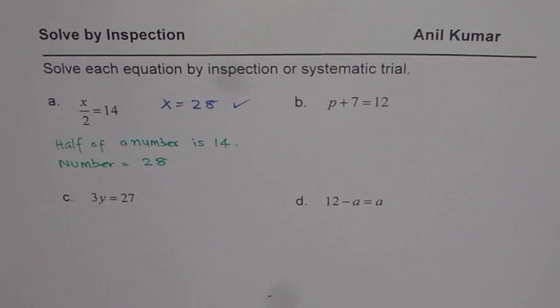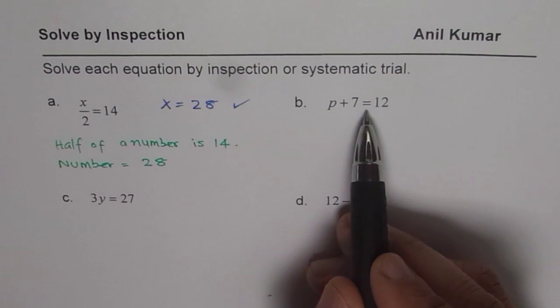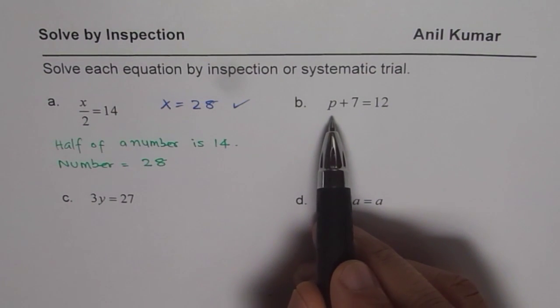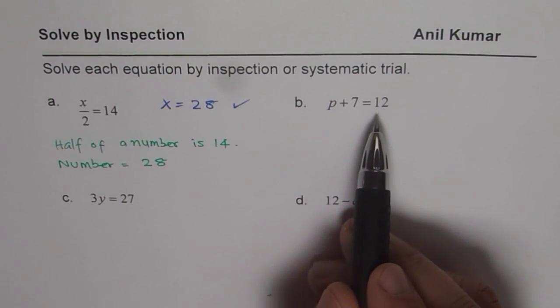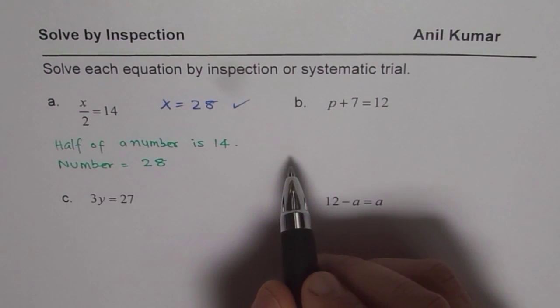So like this you can answer by inspection. The next equation is p plus 7 equals 12. P is the variable. So when you add 7 to p you get 12, or you could say 7 more than p is 12. So what should be p?